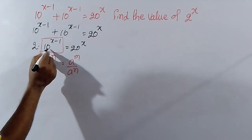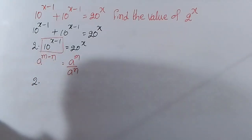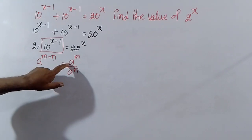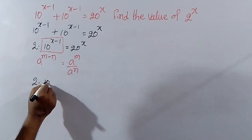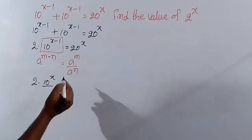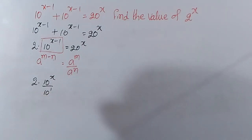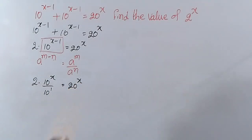So, a power (x minus 1) is equal to a power x divided by a. That means 10 power (x minus 1) equals 10 power x divided by 10 power 1, which is 10 power x divided by 10, and this equals 20 power x.